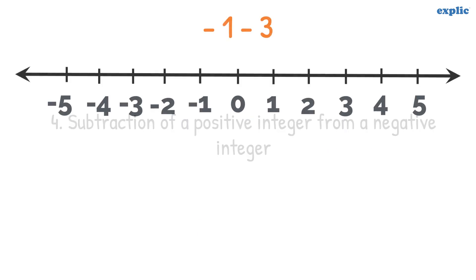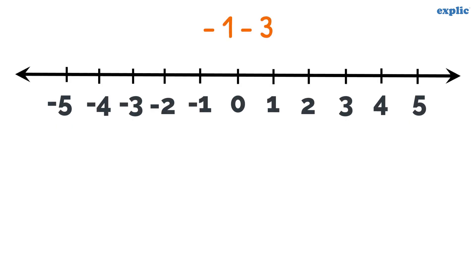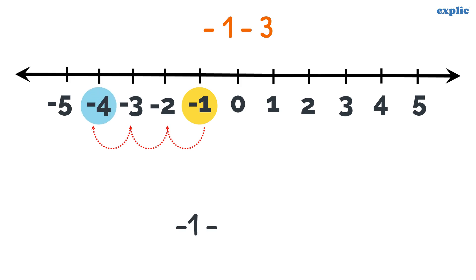To subtract 3 from minus 1, first locate minus 1 on the number line. Then move 3 steps in the left direction. The number we land on is the answer.